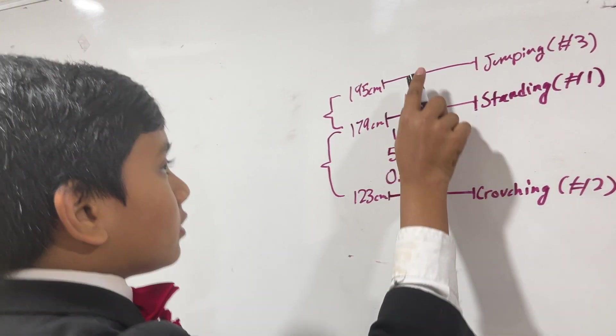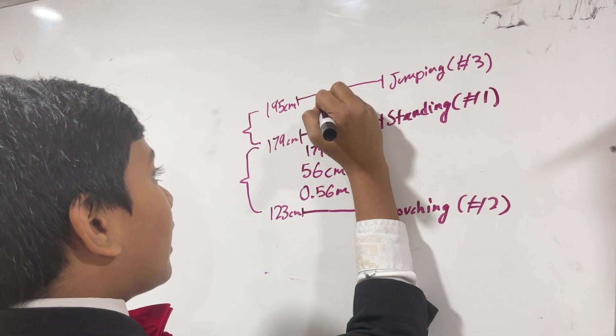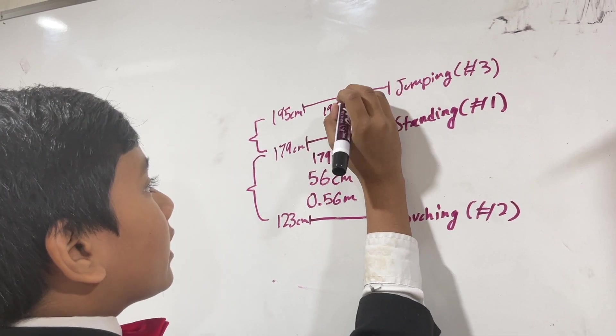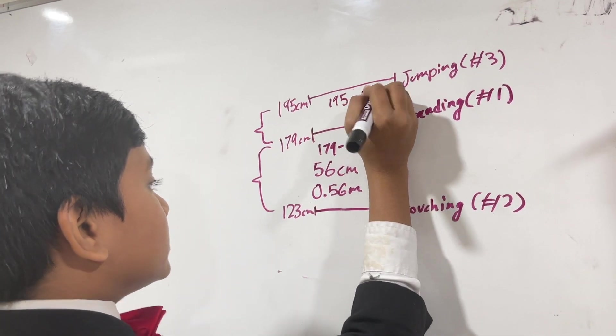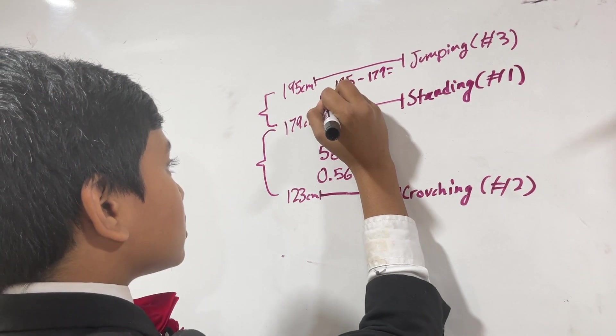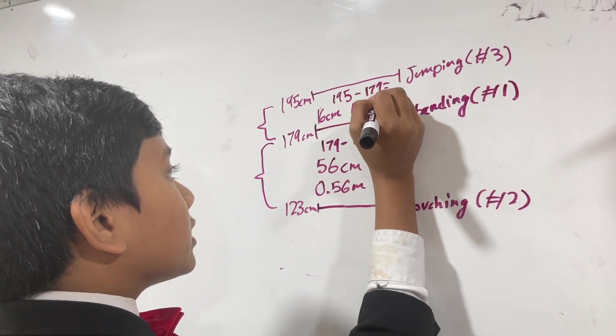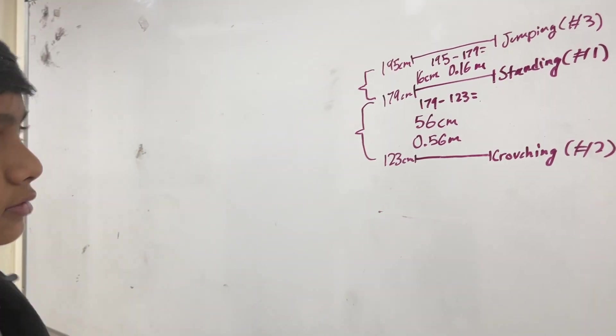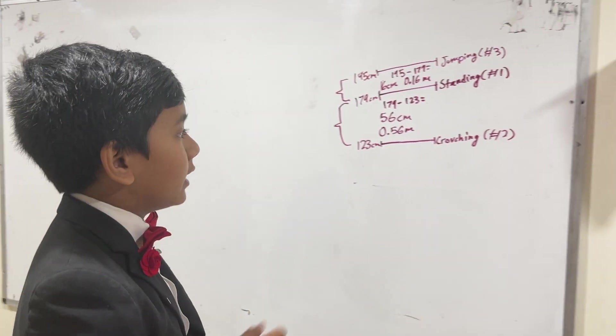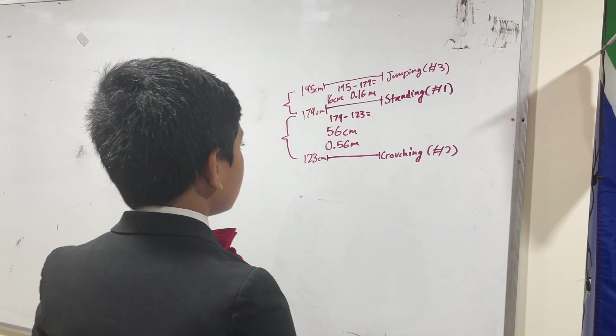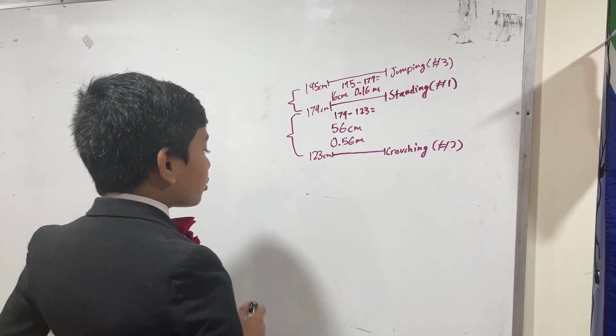What about here? We have 195 minus 179 is 16 centimeters, or 0.16 meters. All right, so that's our diagram, all good and done.